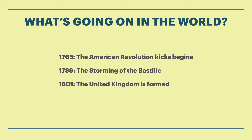This is a period of great turmoil throughout the Western world. In 1765, the American Revolution sorts of kicks off. In 1789, we have the Storming of the Bastille in France. And in 1801, we have the Kingdom of Great Britain and the Kingdom of Ireland — two separate kingdoms joining together and becoming the United Kingdom of Great Britain and Ireland.